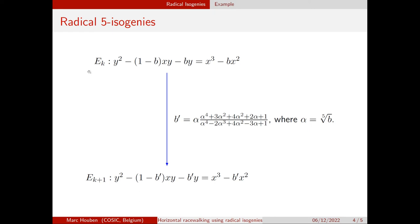For example, this is radical five isogenies. Let's say we have an elliptic curve of this special form for some value of the parameter B. Then the radical five isogenies formula tells us what the next curve in the sequence of five isogenies is going to be in terms of this parameter B. It's a very simple expression that depends on the fifth root of B, and this is much faster. Compared to sampling random points, this is much better, and it's currently the fastest way to compute long chains of five isogenies.